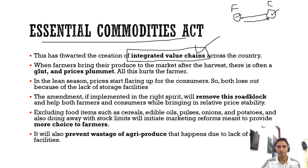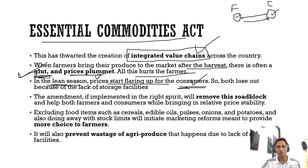When farmers bring their produce to the market after harvest, there is often a glut — meaning oversupply. When farmers reap and bring produce to market, oversupply causes prices to fall down. Farmers don't get the right money. During the lean season, prices start flaring up for consumers. Due to the Essential Commodities Act, both sides lose because of the lack of storage facilities — private players are not incentivized to maintain storages.